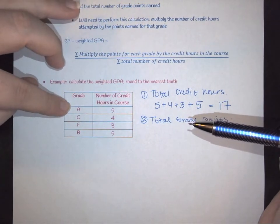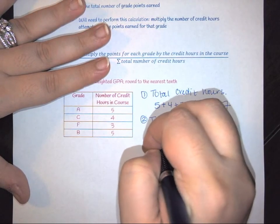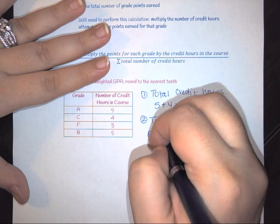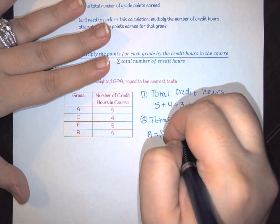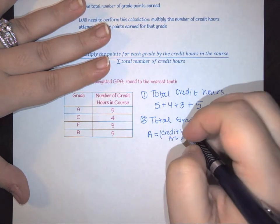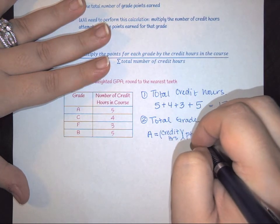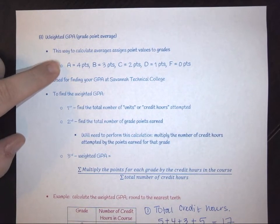For example, when we're looking at an A, we have to take your credit hours and multiply that by the points earned. The points earned comes from this grade scale, so an A earns you four points.